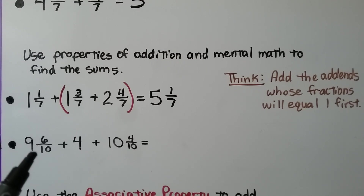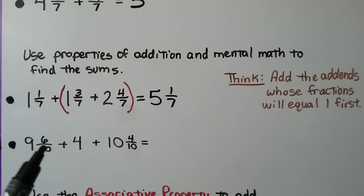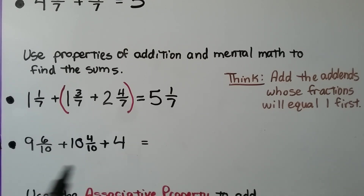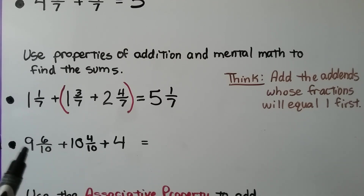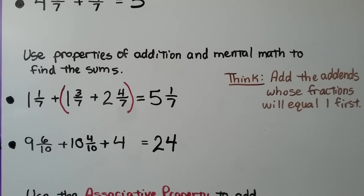We have 9 and 6 tenths plus 4 plus 10 and 4 tenths. We add the addends whose fractions equal 1 first. We see 6 tenths and 4 tenths — we add those two mixed numbers together first because the fractions make 10 tenths, so we change their order. We have 6 tenths and 4 tenths making 1 whole; added to 9, we have 10. Now 10 plus 10 equals 20. We add 4 whole to get 24. The commutative and associative properties can help us do mental math when adding fractions.